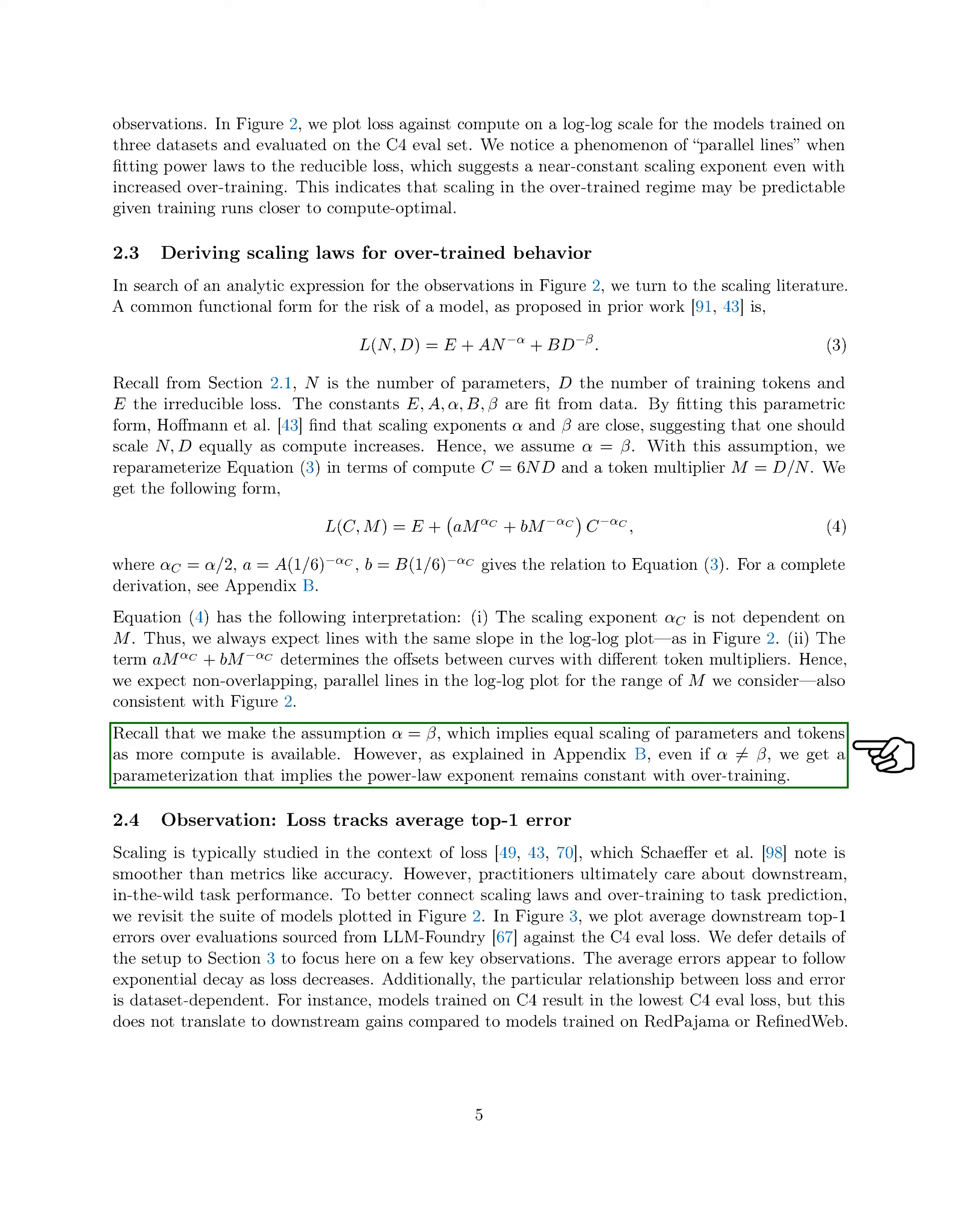Even if alpha is not equal to beta, we obtain a parameterization that implies a constant power law exponent with overtraining.